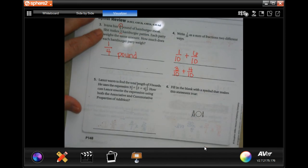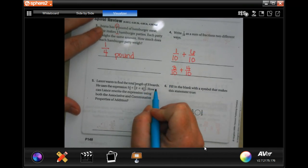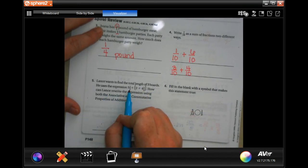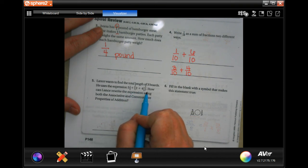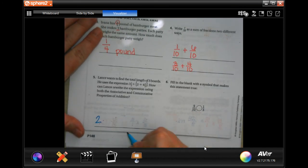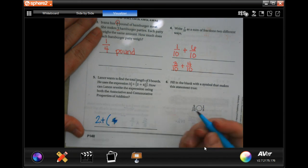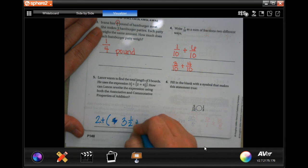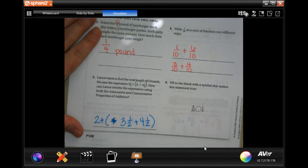Lance wants to find the total length of three boards. He uses the expression three-and-a-half plus two plus four-and-a-half. Now, how can Lance write the expression using both associative and commutative properties of addition? So, he could add the two plus three-and-a-half plus four-and-a-half. Boom. Done.